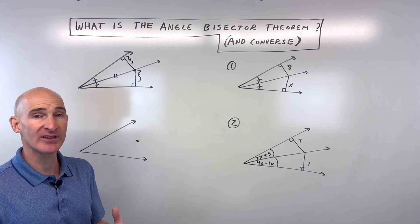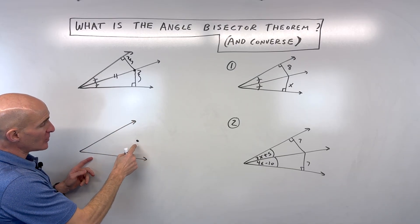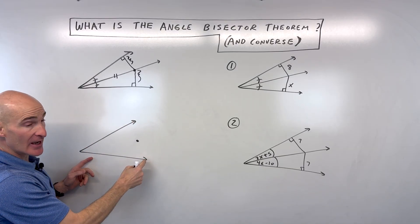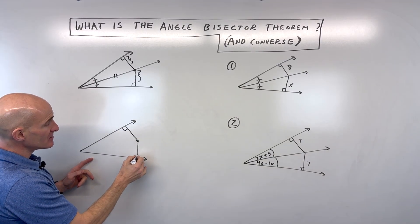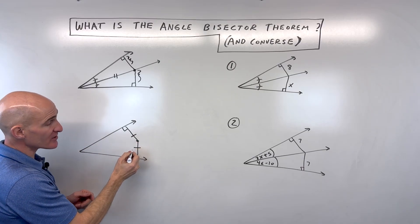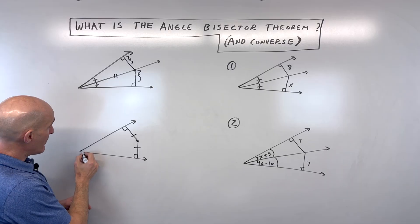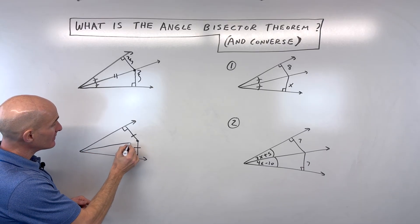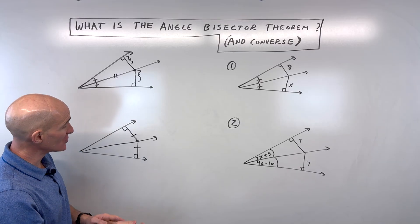Now, when you look at the converse of the angle bisector theorem, what is that saying? Well, say you have an angle, and you pick a point on the interior of this angle, and you measure the perpendicular distance to both sides of the angle. If those distances are the same, what do you know about this point? Well, it must lie on the angle bisector.